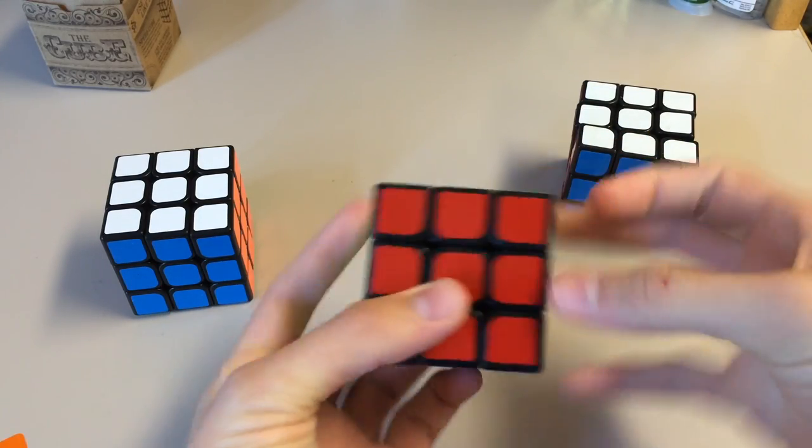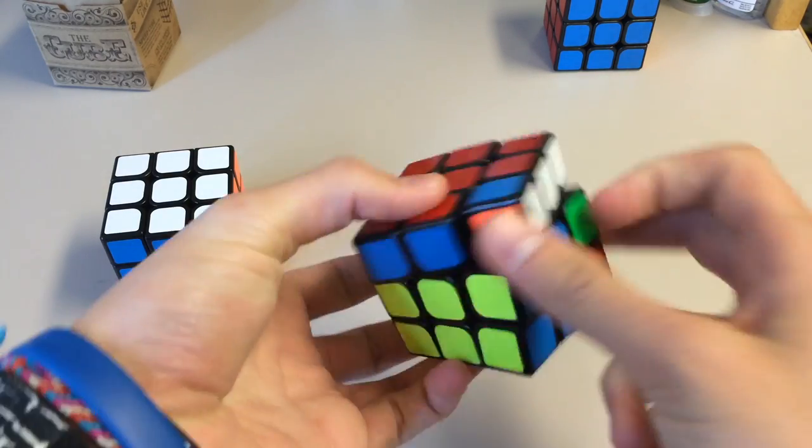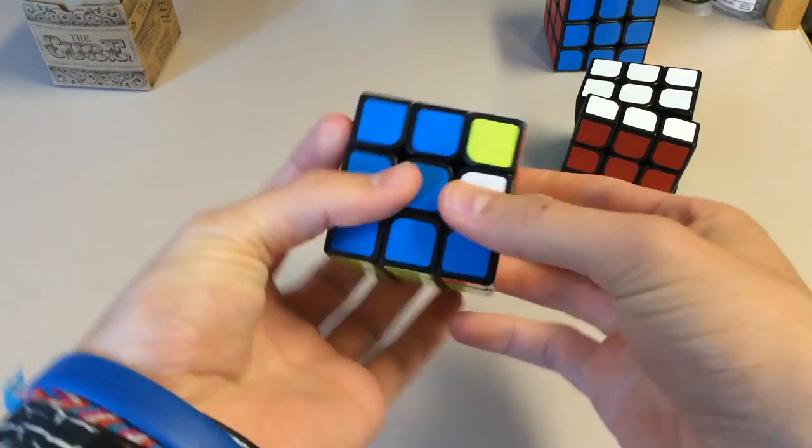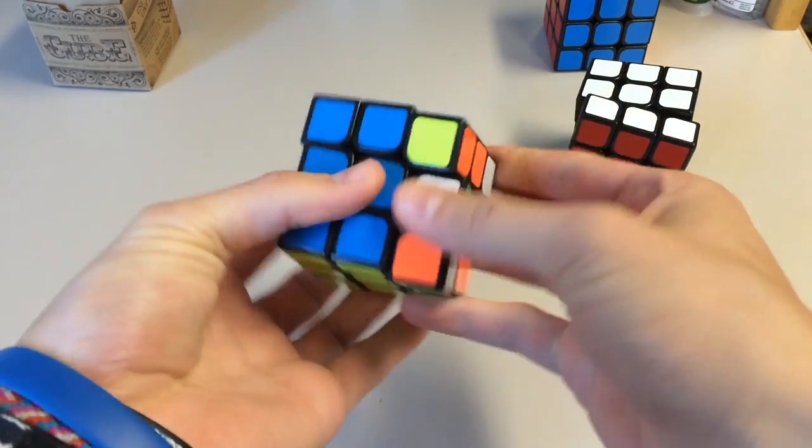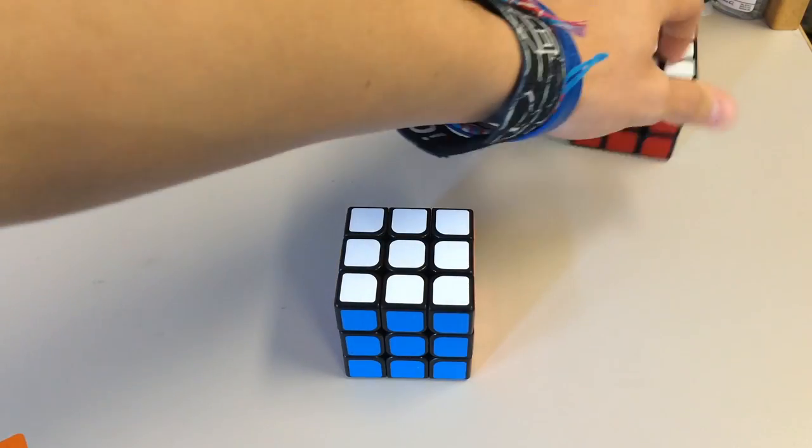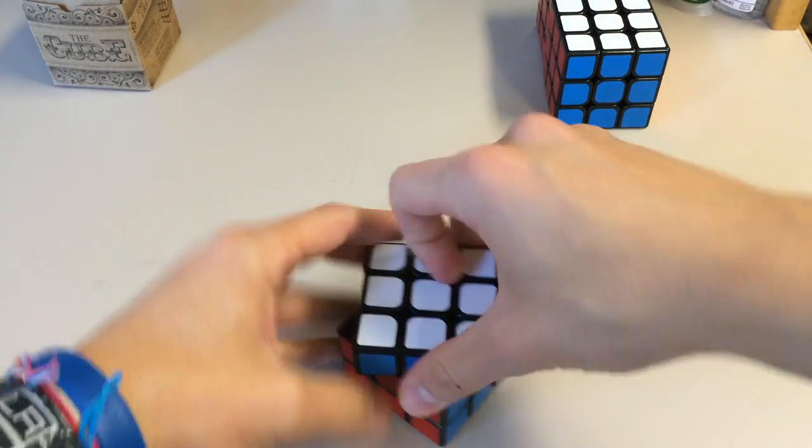Okay, so this guanlong. These are a great price. It's $4 on thecubicle.us. But anyways, let's go ahead and take a look at the pieces.